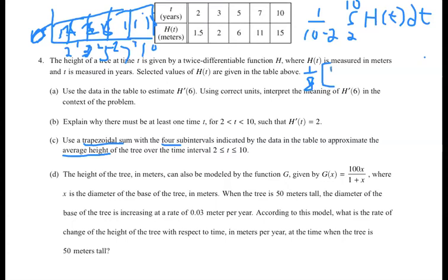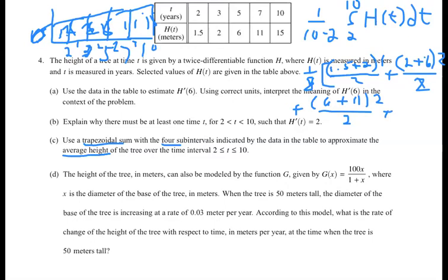So base 1 is 1.5 plus base 2 is 2 times the height, which is that 1 all divided by 2. Plus, 2 plus 6 and the height of those two is the distance between 3 and 5, which is 2, divided by 2. Plus, the base of 6 plus 11 and the height between 5 and 7 is 2 divided by 2. Plus, the last one is the base of 11 plus 15, and from 7 to 10 is a height of 3, all of that divided by 2. That right there would be our answer.